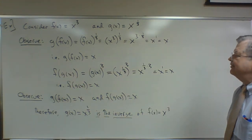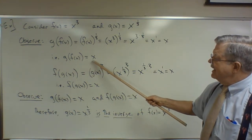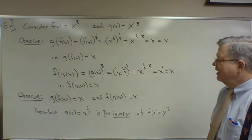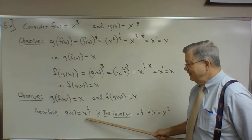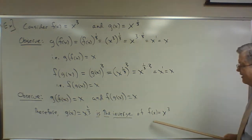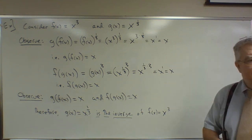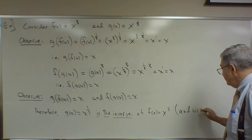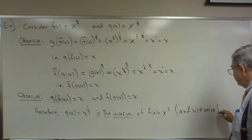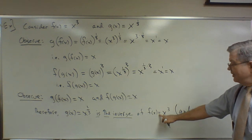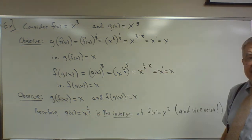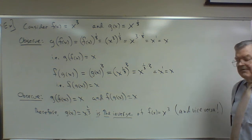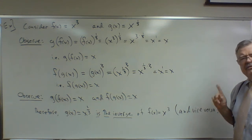Let's make sure we get this. We've just shown that g evaluated at f of x equals x, and f evaluated at g of x equals x. Therefore, g of x, which is x to the 1/3, is the inverse of f of x equals x cubed, and vice versa. f of x equals x cubed is also the inverse of g of x equals x to the 1/3. This is a good example for inverses, but let's do another one.